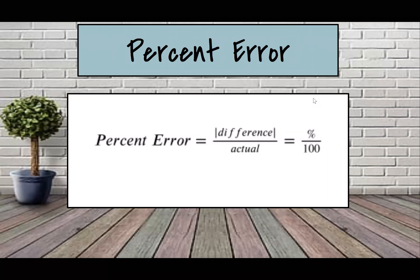The next thing we're going to talk about is percent error. Percent error is similar to percent change but this is when you make a mistake. This matters in medicine — say you're working in a pharmacy and you're off on a dosage, that would be a huge deal. In baking, being off might change a recipe a little but isn't as critical. The formula is: absolute value of the difference over the actual equals percent over 100. The only change from percent change is that we use 'actual' instead of 'original' on the bottom.